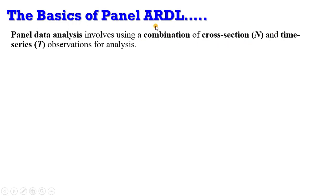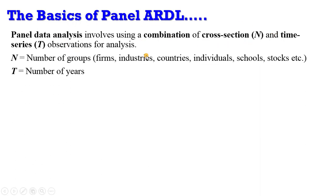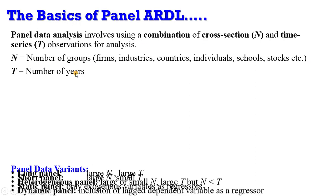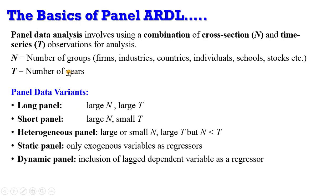Panel data analysis involves using a combination of cross-section and time series observations. N is the number of groups — groups can be firms, industries, countries, individuals, schools, stocks, or cars — essentially anything. T represents the number of time periods. There are different types of panel data variants: the long panel has a large N and a large T.